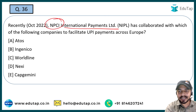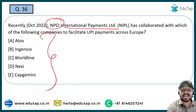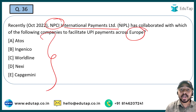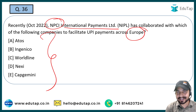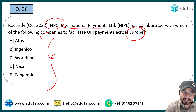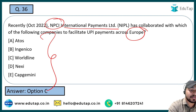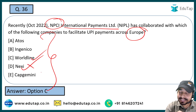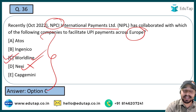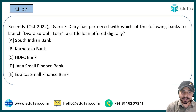The next question: NPCI International Payments Limited recently collaborated with which company so that Unified Payment Interface payments can be facilitated in Europe? NPCI International Payments Limited has signed this collaboration. The right answer is Worldline — kindly note it. It is not Option D; the right answer is Worldline.